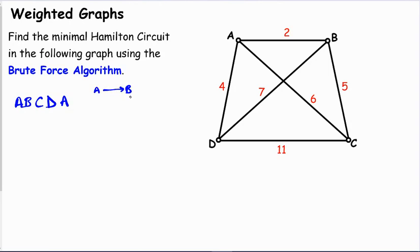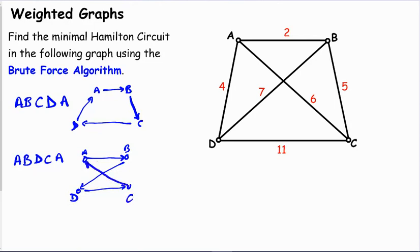A goes to B, but instead of to C, it'll go to D, then to C, A, B, D, C, A. And we'll draw the graph that goes with A. So we can see that this second graph is different from the first graph. So we did A, B, C, D, A. Then we did A, B, D, C, A.